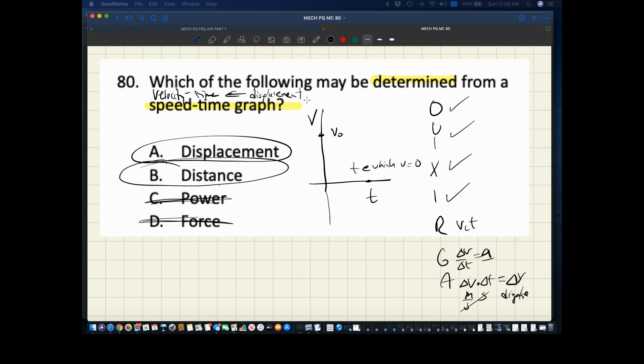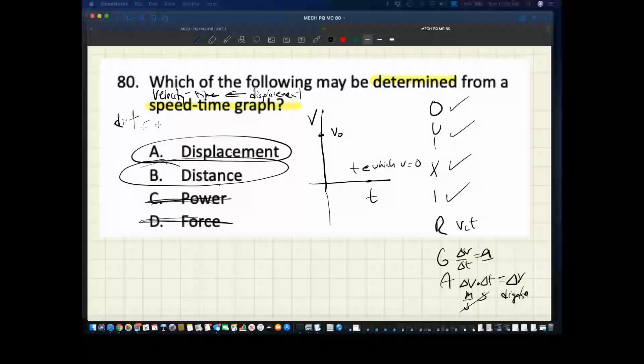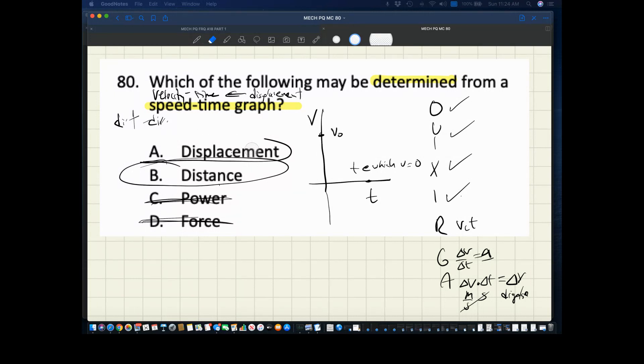So this question really is looking at the distinction between distance and displacement and speed and velocity. So the best answer in this case is distance because they're talking about speed.